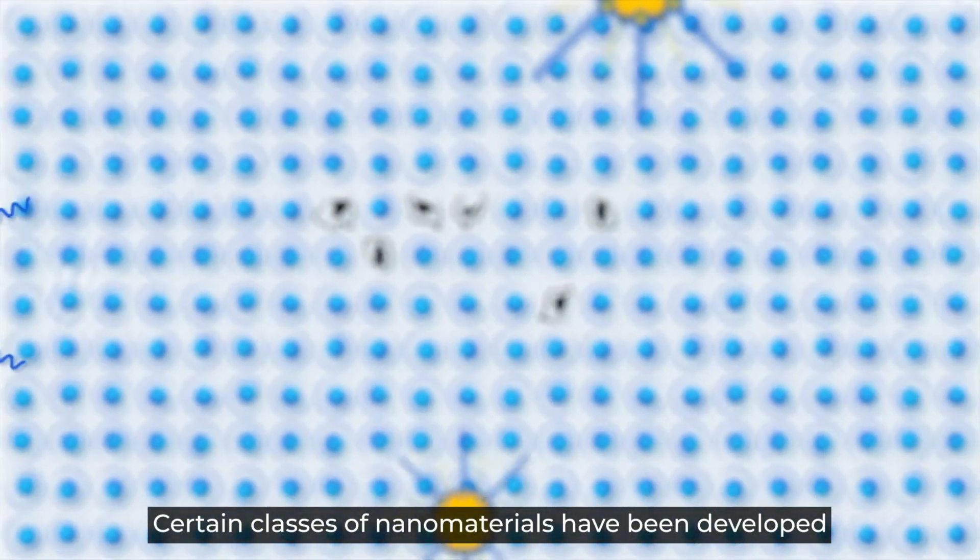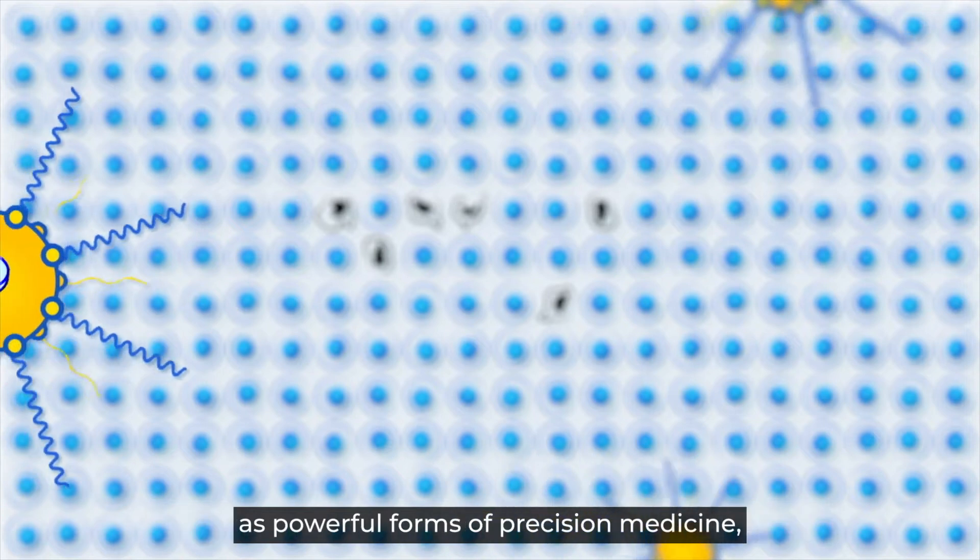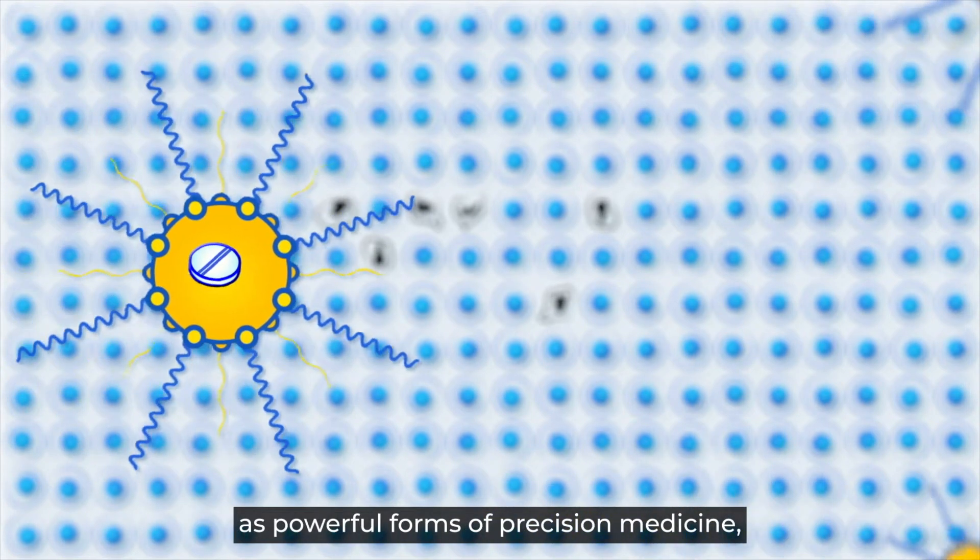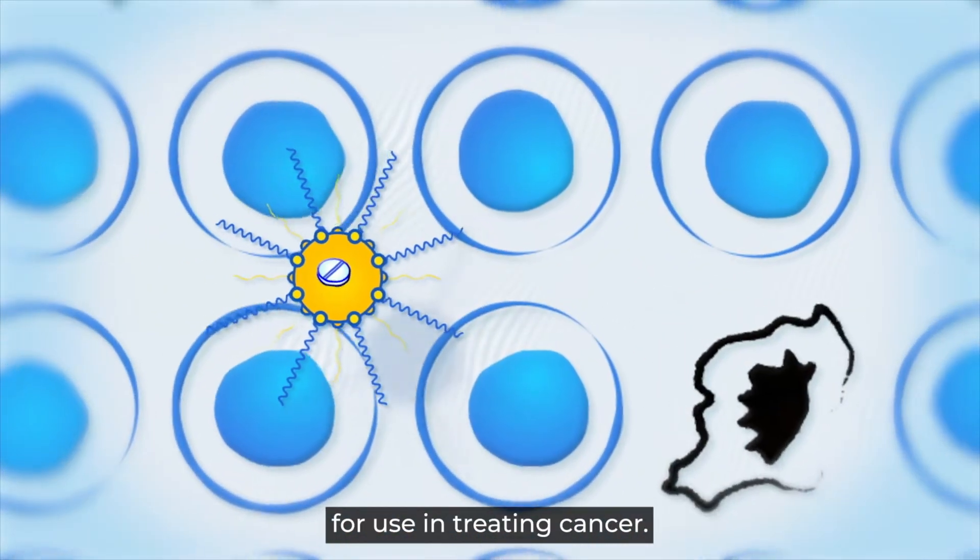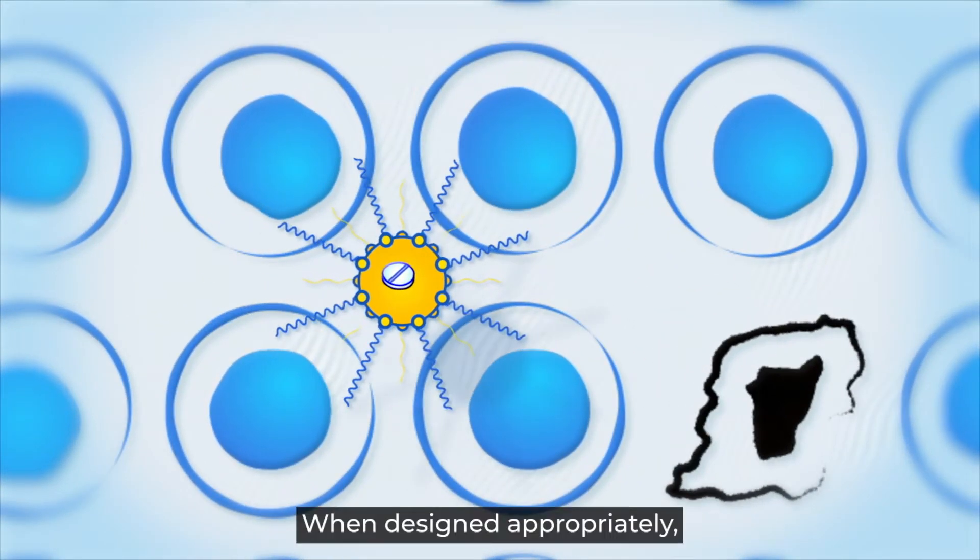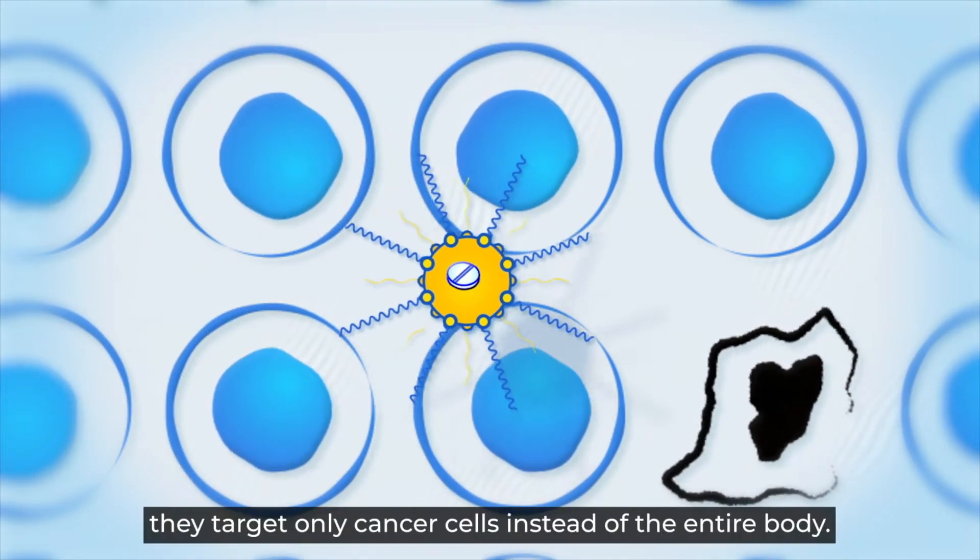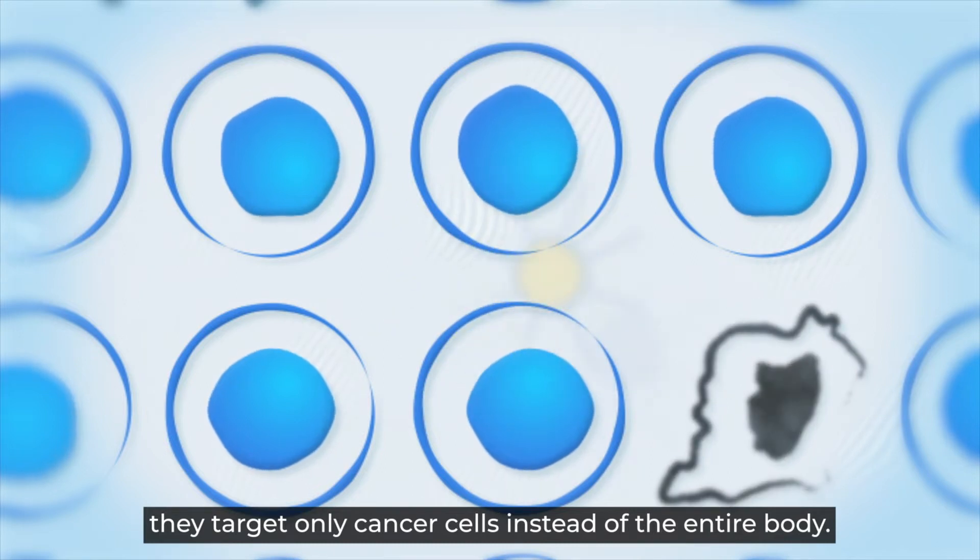Certain classes of nanomaterials have been developed as powerful forms of precision medicine, some of which can be coupled with chemotherapy for use in treating cancer. When designed appropriately, they target only cancer cells instead of the entire body.